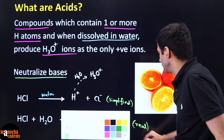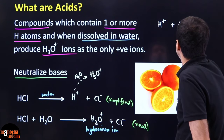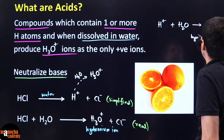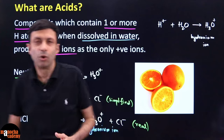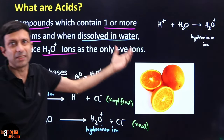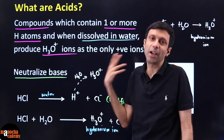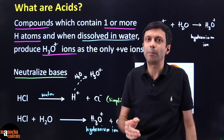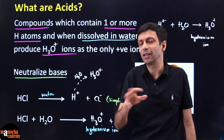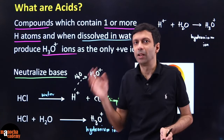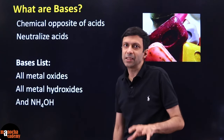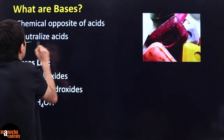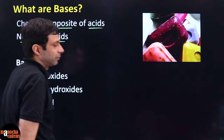Now let's talk about bases. Just like acids neutralize bases, bases neutralize acids — they are the chemical opposites of acids. Bases are metal oxides, metal hydroxides, and ammonium hydroxide. NH4OH is written separately because NH4 is made of non-metals, but ammonium hydroxide still behaves as a base. So the three important categories of bases are: metal oxides, metal hydroxides, and ammonium hydroxide.